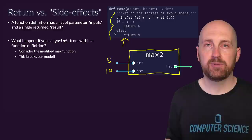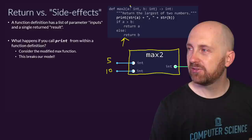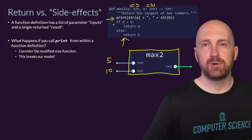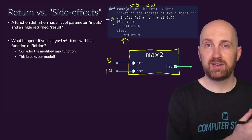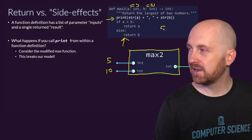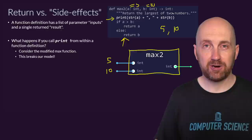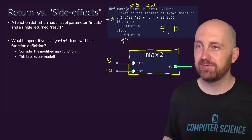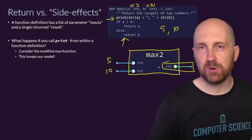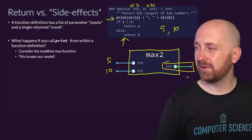Let's imagine this function call playing out. Say a is 5 and b is 10. The first thing that happens after we pass those arguments into the parameters is we hit the first line of the function definition that says print. We're going to print the string a, which is 5, concatenated with a comma and then 10 — so "5, 10" is printed to our terminal. But notice this function call has not completed; we haven't yet reached the return statement, which is what this function results in.